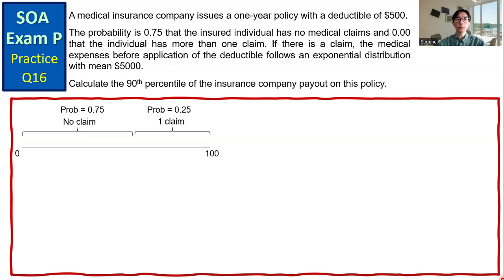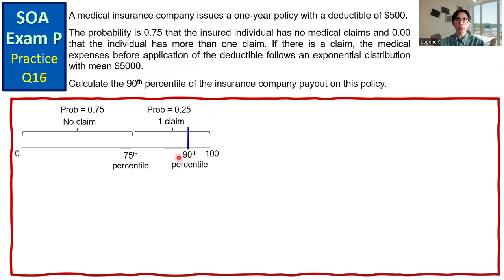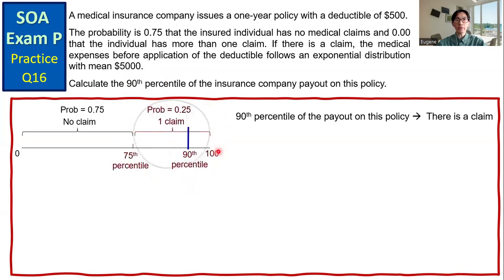Let's take a look at the solution. The probability is 0.75 that there is no claim, and from the question, the probability is zero that the individual has more than one claim. This implies the probability is 0.25 that the individual has exactly one claim. We need to get the 90th percentile. The 90th percentile of the payout on this policy falls under the event that there is exactly one claim, so let's focus on this 25%.